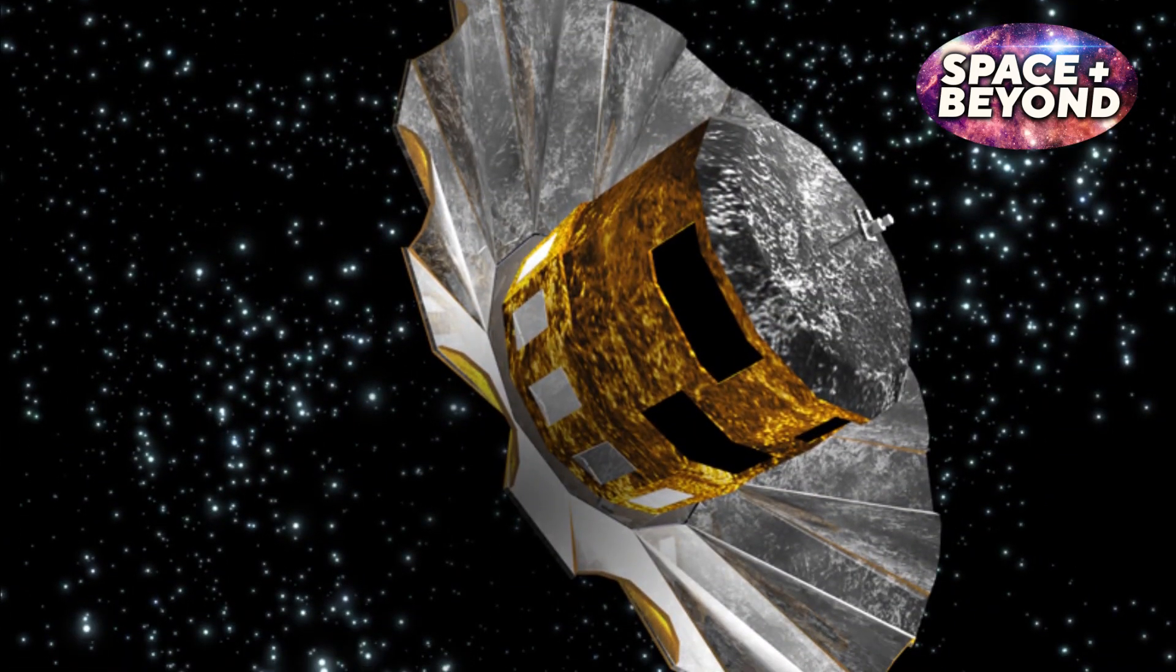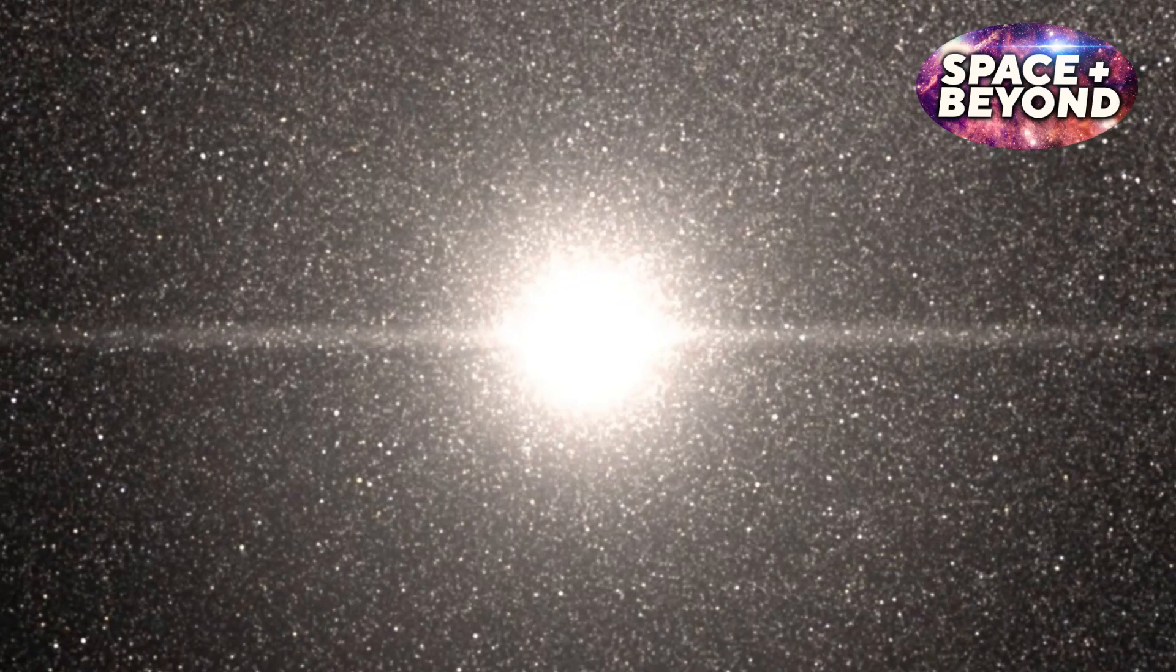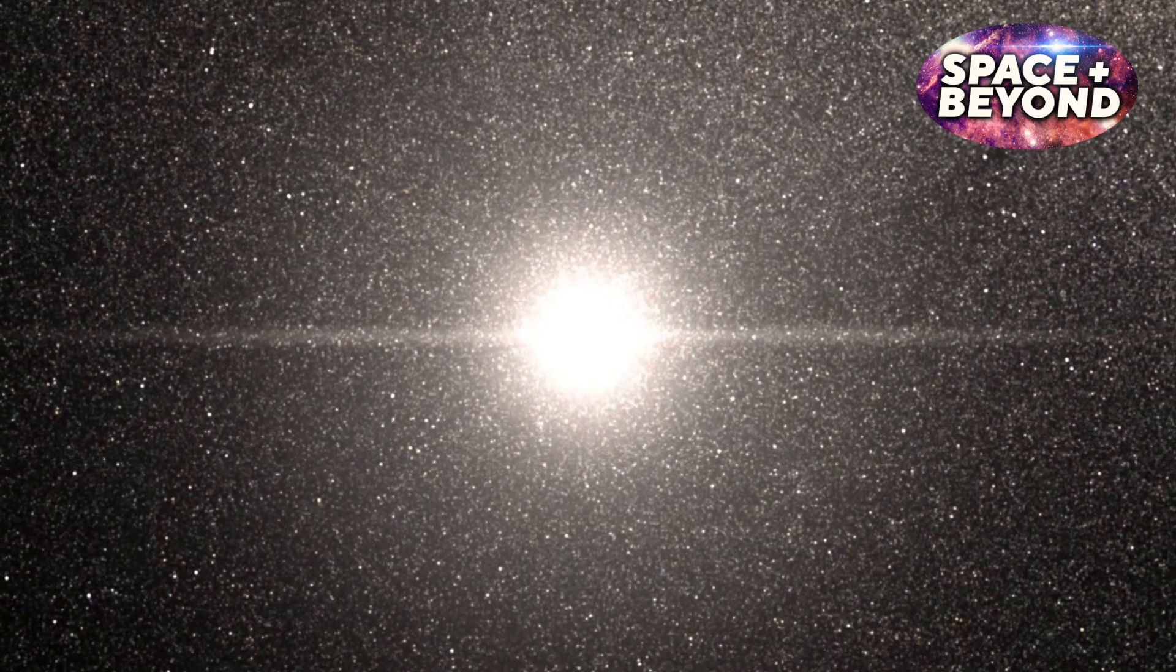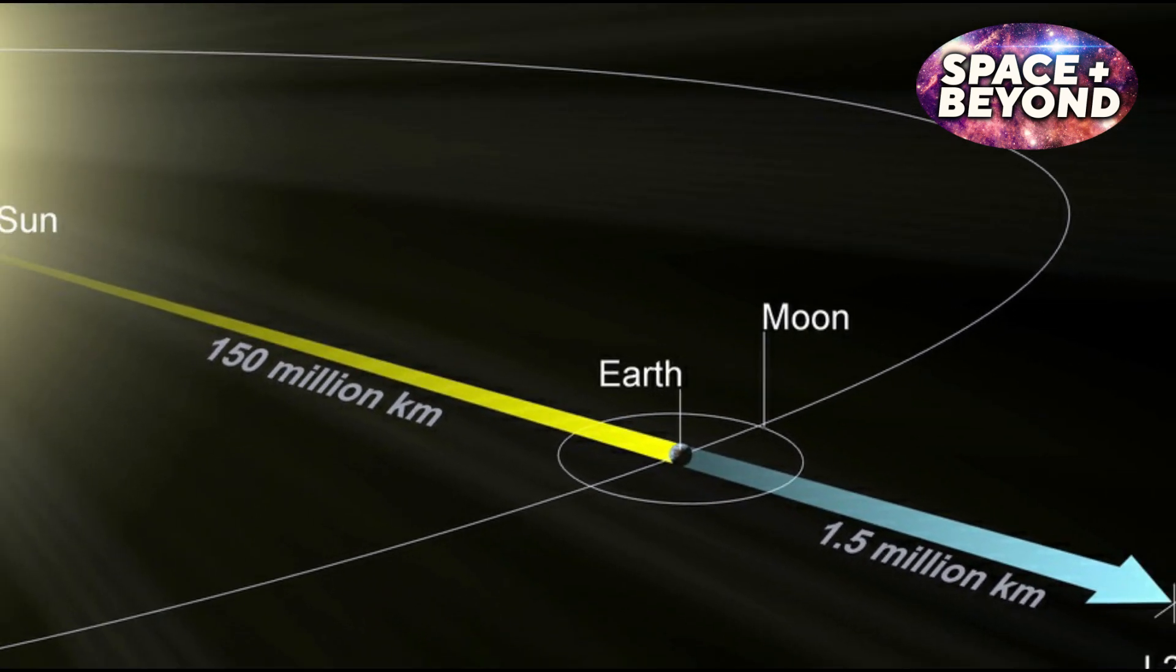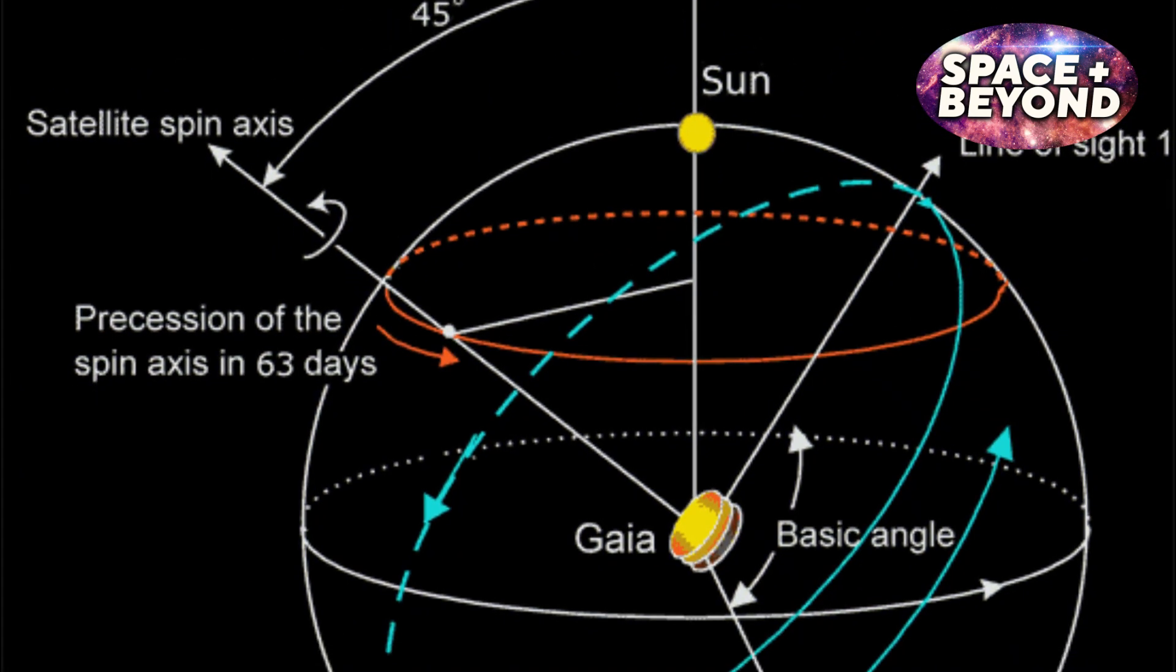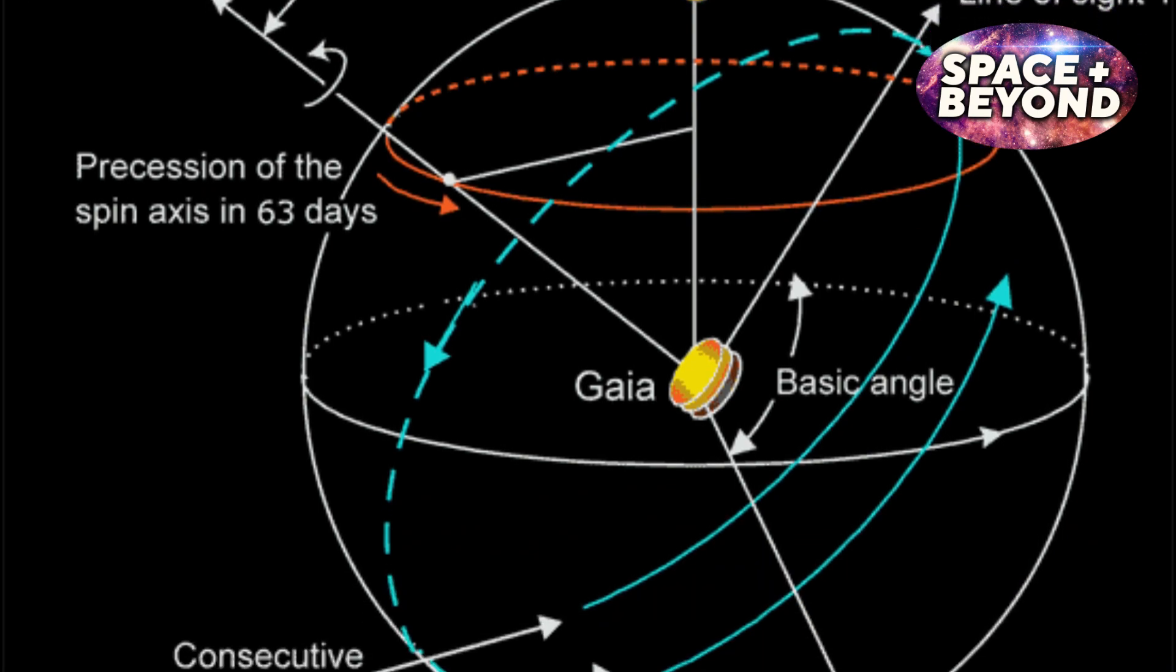Gaia was designed as an improvement on its predecessor, with the goal of measuring even more accurate values for up to one billion stars. It orbits about 1.5 million kilometers from Earth and circles our planet once every five days, at a speed of 30,000 kilometers per hour.